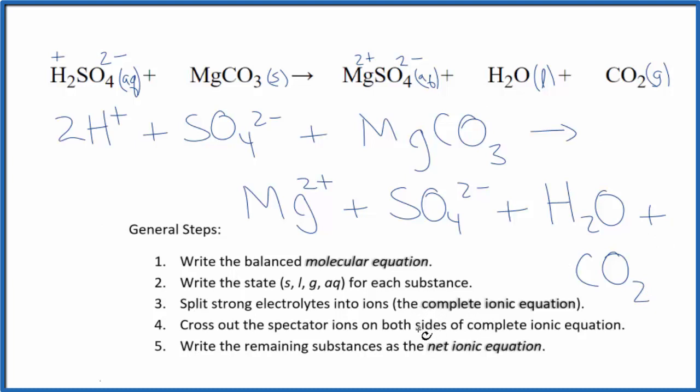Now we can cross out spectator ions. They're on both sides. So let's see what we've got. I see in the reactants, here's a sulfate, and here in the products, that's a sulfate. Let's cross that out. But that's the only thing. Everything else is unique. So this is our net ionic equation for H2SO4 plus MgCO3.